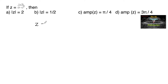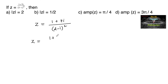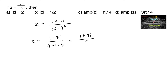If z is equal to (1 + 7i) / (2 - i) whole square, let us simplify this. We can write (2 - i)² as 4 + i² - 4i, and since i² is -1, this becomes 3 - 4i. So z is equal to (1 + 7i) / (3 - 4i).